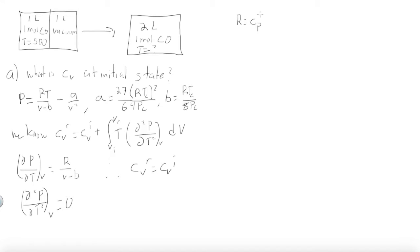Next, we can use the equation that R is equal to CP ideal minus CV ideal. Basically, R is equal to the specific heat at constant pressure minus the specific heat at constant volume.